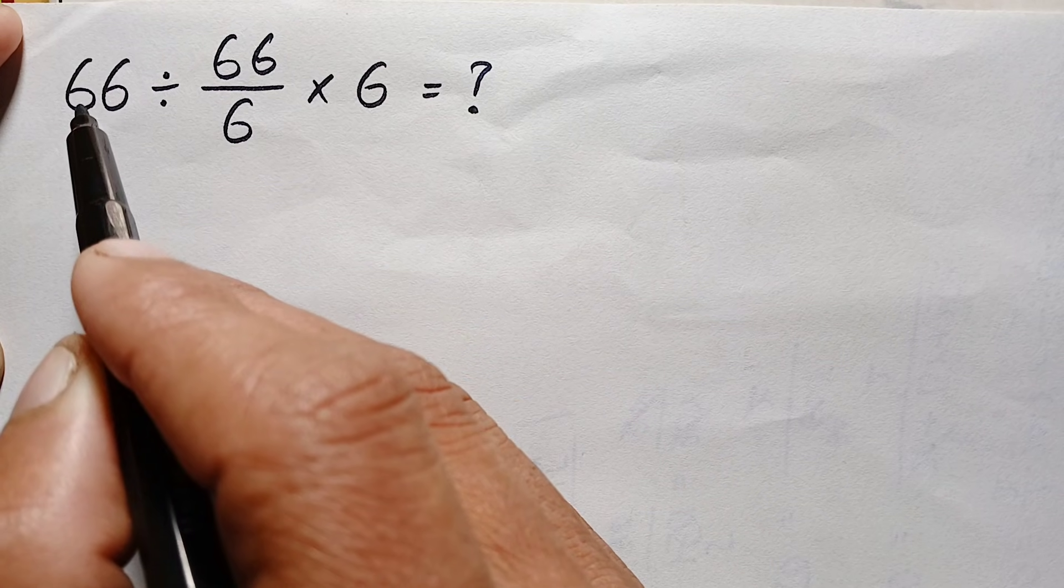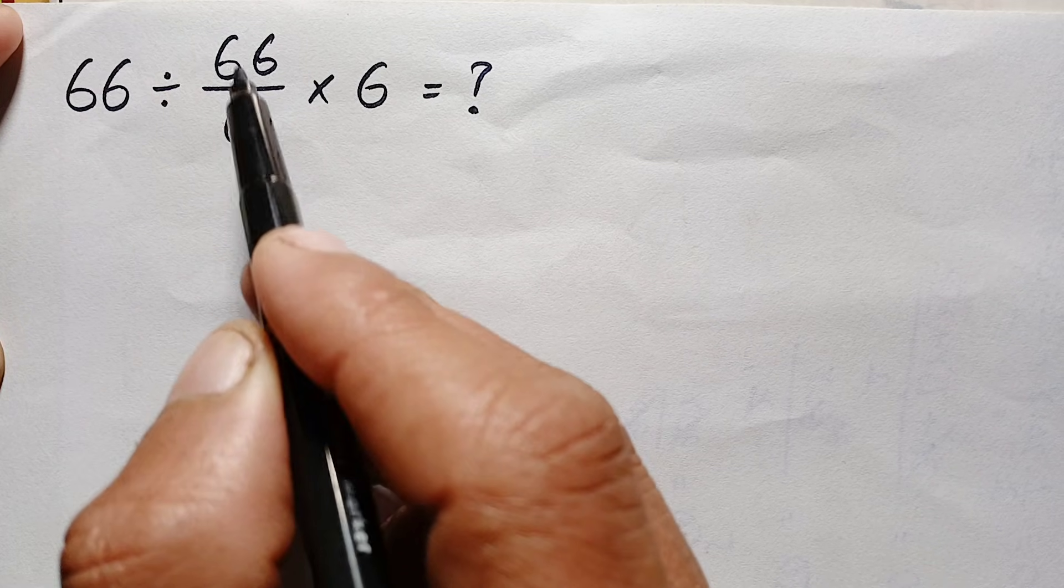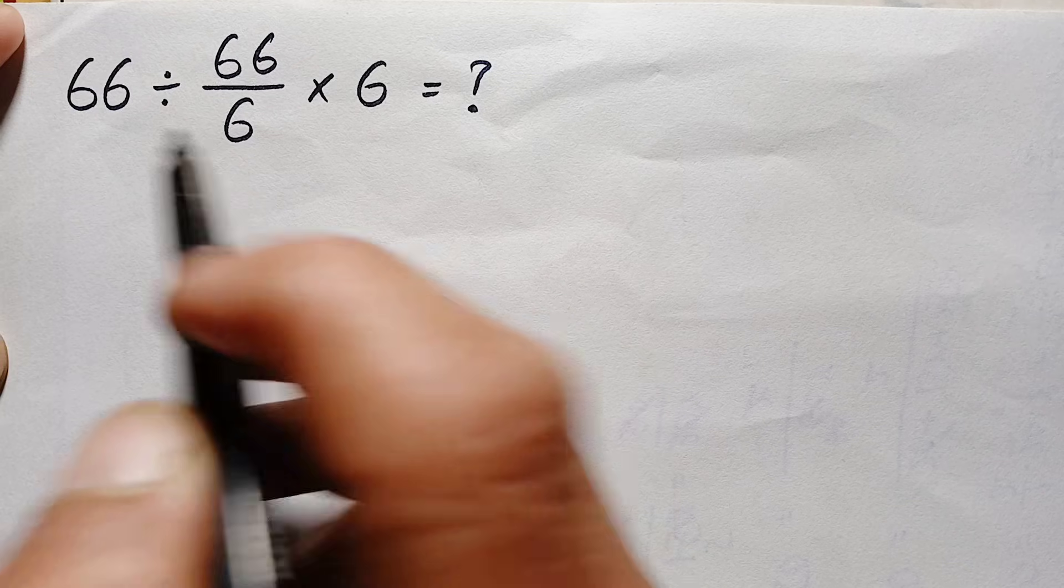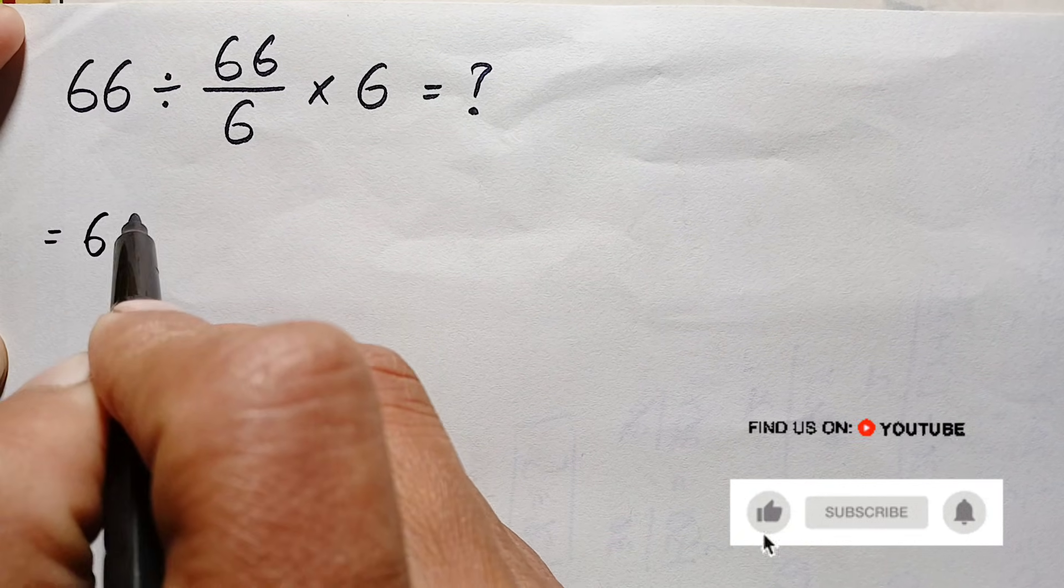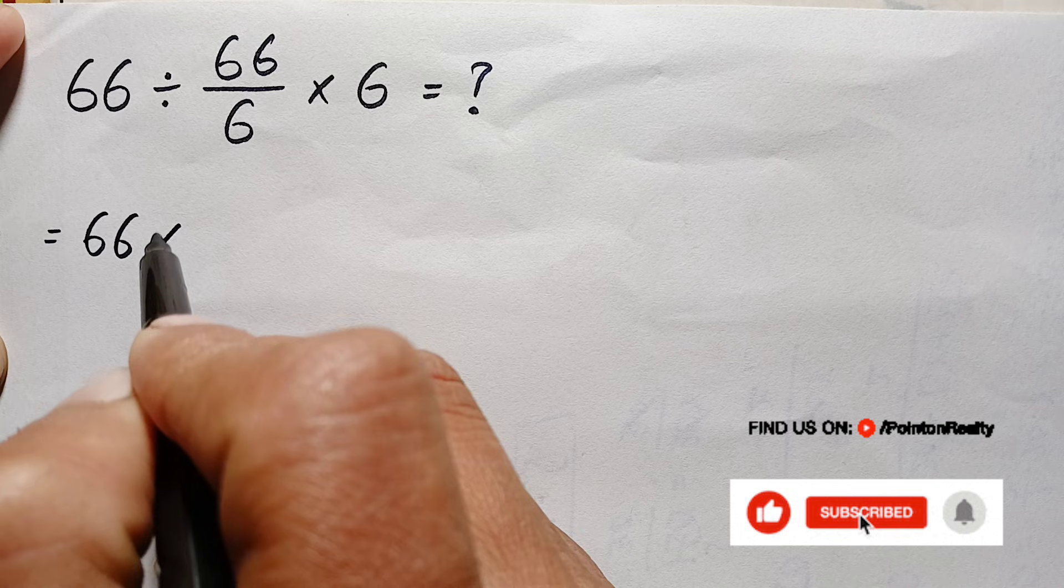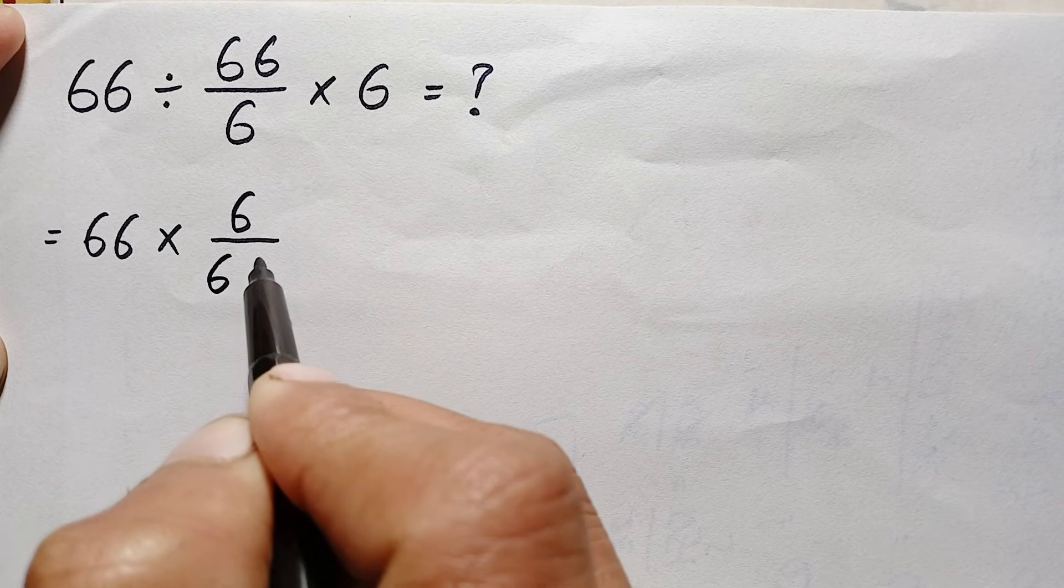By KCF we will leave the first number as the same, we will change the division sign to multiplication, and we will take the reciprocal of this fraction. We will reverse this fraction. So therefore this becomes 66, we change the division to multiplication, and this becomes 6 divided by 66 times 6.